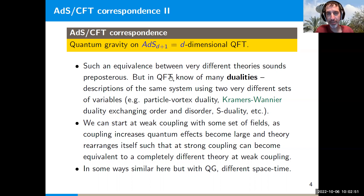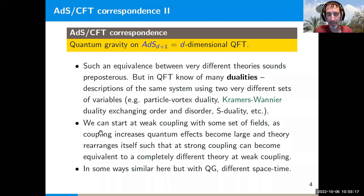In quantum field theory we know many examples of dualities — particle-vortex duality, Montonen-Olive duality, S-duality — where we describe the same system using two very different sets of variables. Typically we start at weak coupling, increase the coupling constant, quantum effects become large, and the theory rearranges itself so that at strong coupling it becomes equivalent to a completely different, weakly-coupled theory.